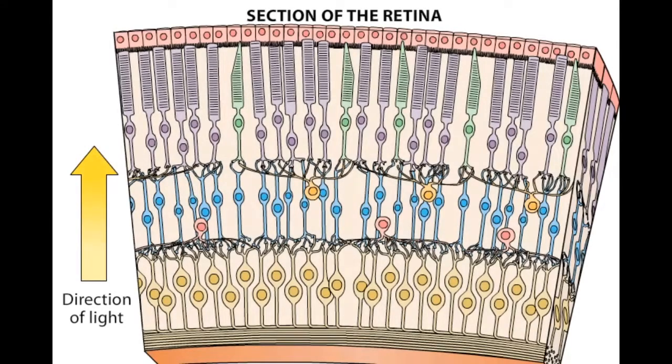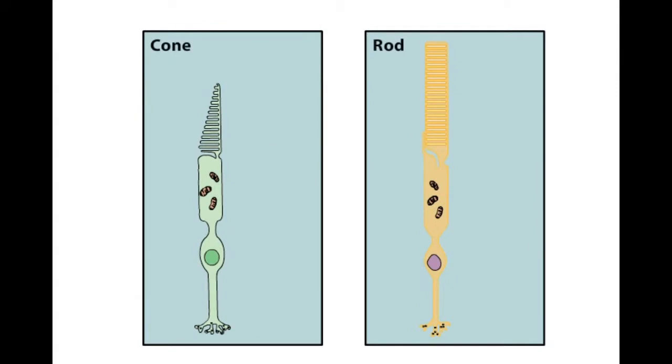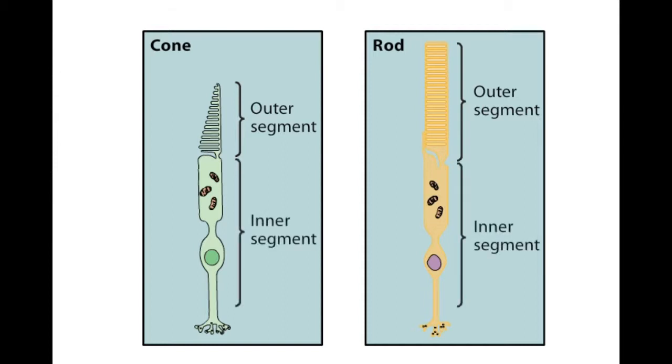The retina contains two types of photoreceptors, rods and cones. Both types have an outer segment composed of membranous discs containing light-sensitive photopigments. Each also has an inner segment that contains the cell nucleus and gives rise to synaptic terminals that contact bipolar and horizontal cells.